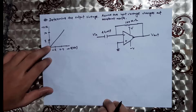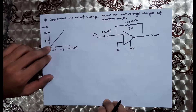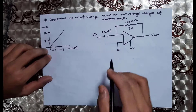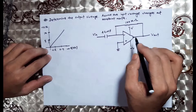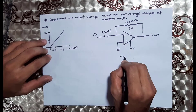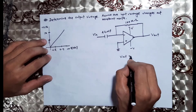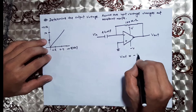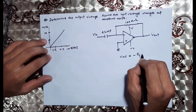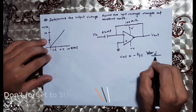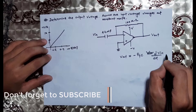Hi, in this video we are going to solve a differentiable problem. We are going to solve the basic theory of the differentiator. The output voltage is equal to minus Rf into C times dVin/dt.